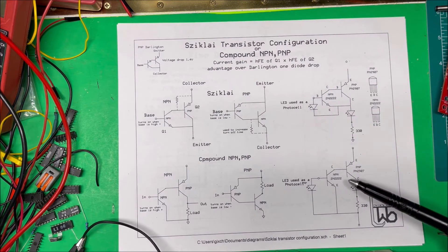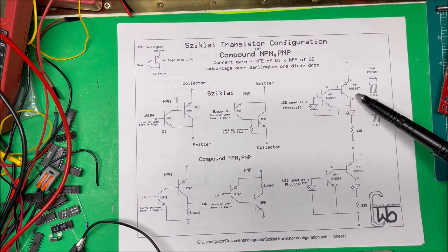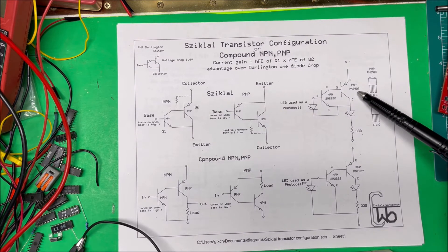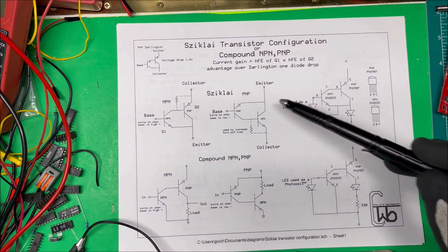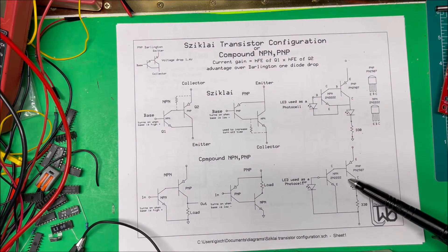What I did is I put two of them together here. I tried each way and I have a 2N2222 and a PN2907, this is a PNP transistor here. I have one hooked up with this Sziklai configuration and one is the compound NPN-PNP.